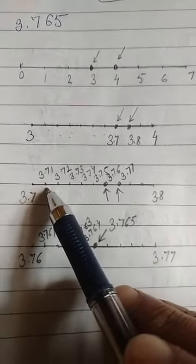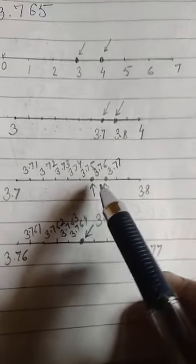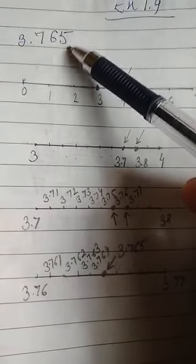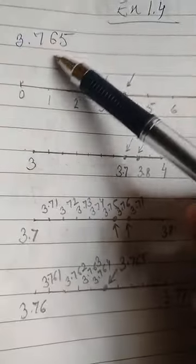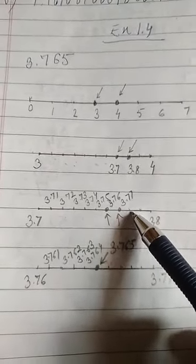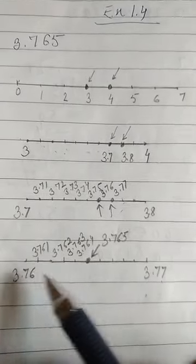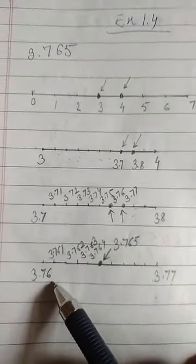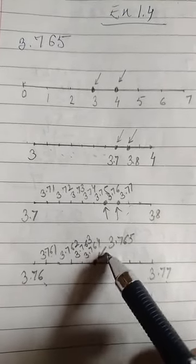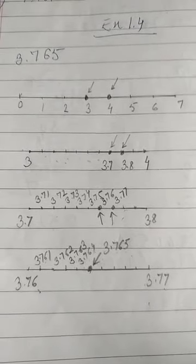The divisions between 3.7 and 3.8 are: 3.71, 3.72, 3.73, 3.74, 3.75, 3.76, 3.77, 3.78, 3.79, and 3.8. The fifth division is 3.765. This is how to locate 3.765 on a number line using successive magnification.